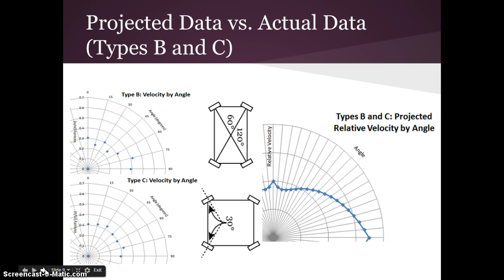For Types B and C, it was kind of a mixed bag. I predicted, as you can see, a very different graph for the projected velocity. And for Type B, it matched it relatively well. However, for Type C, it was both a lot more uniform and a lot slower than I had anticipated.